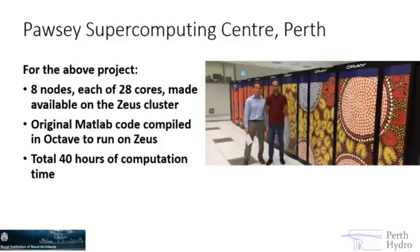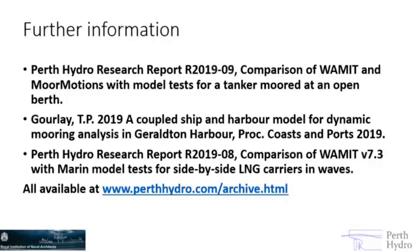We spoke to the Pawsey Supercomputing Centre and they were very helpful. Gino, shown in the picture, had been doing a lot of his PhD research there and helped with this. They gave us eight nodes of 28 cores each, which cut the computation time down to 40 hours. Depending on how big your project is, that determines how much they'll allocate to you, and you can knock over these sorts of simulations within a matter of days. Those research reports are publicly available at the Perth Hydro site if you want any further information.